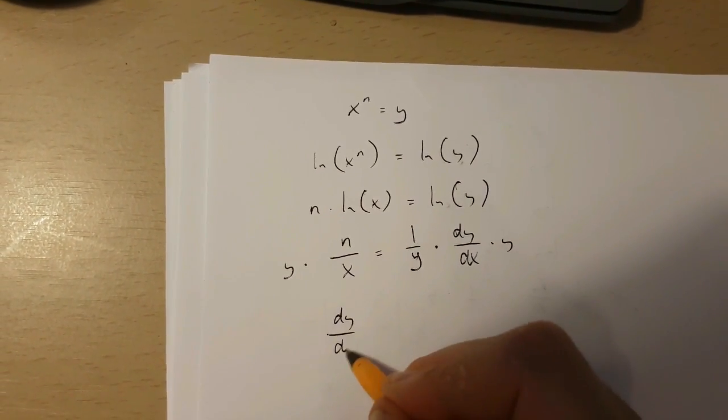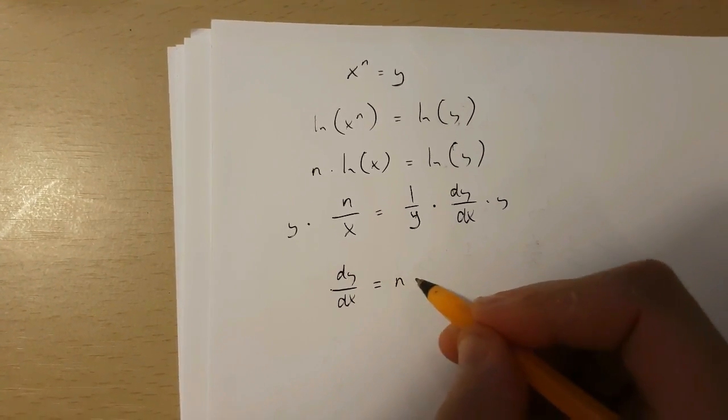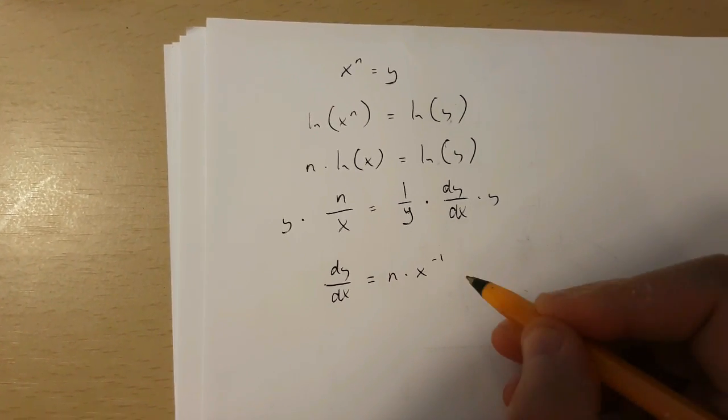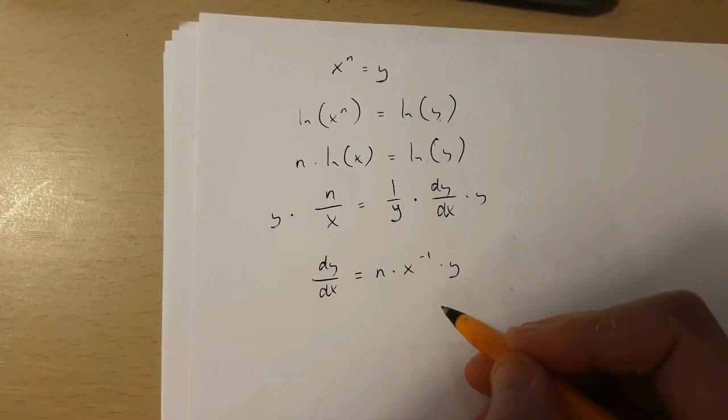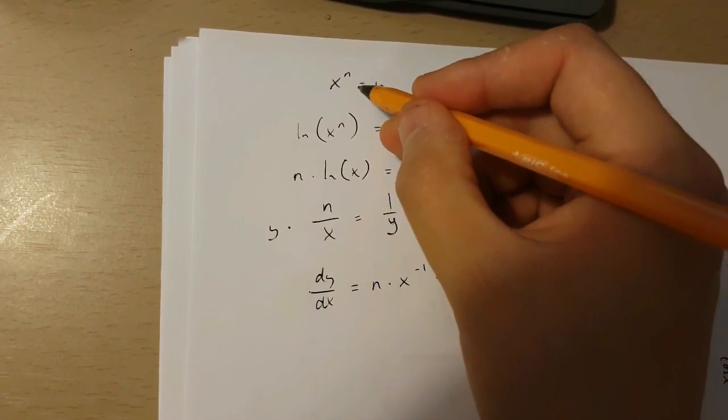So we get dy over dx is equal to n times x to the power of minus 1 times y. But y is equal to x to the power of n.